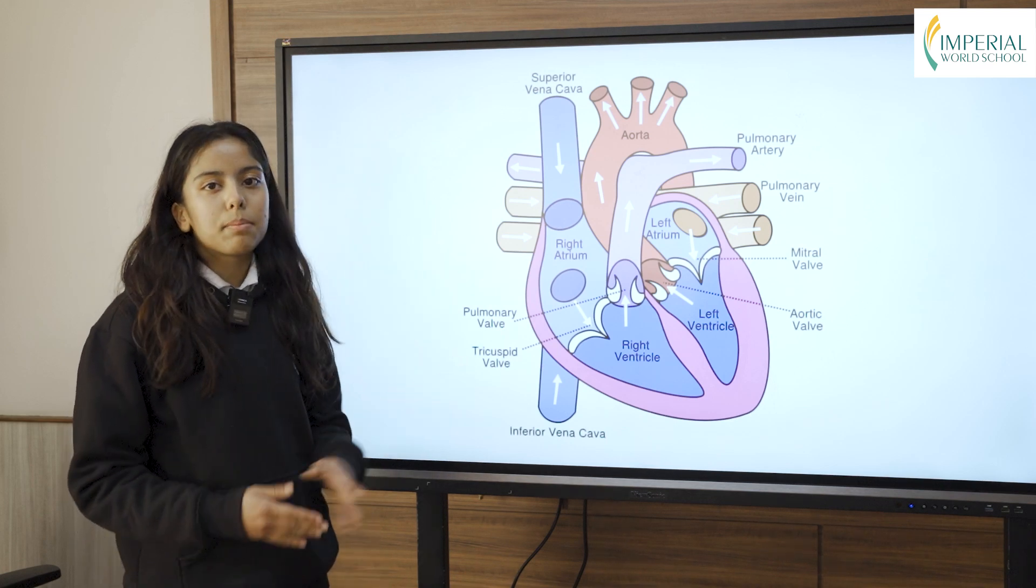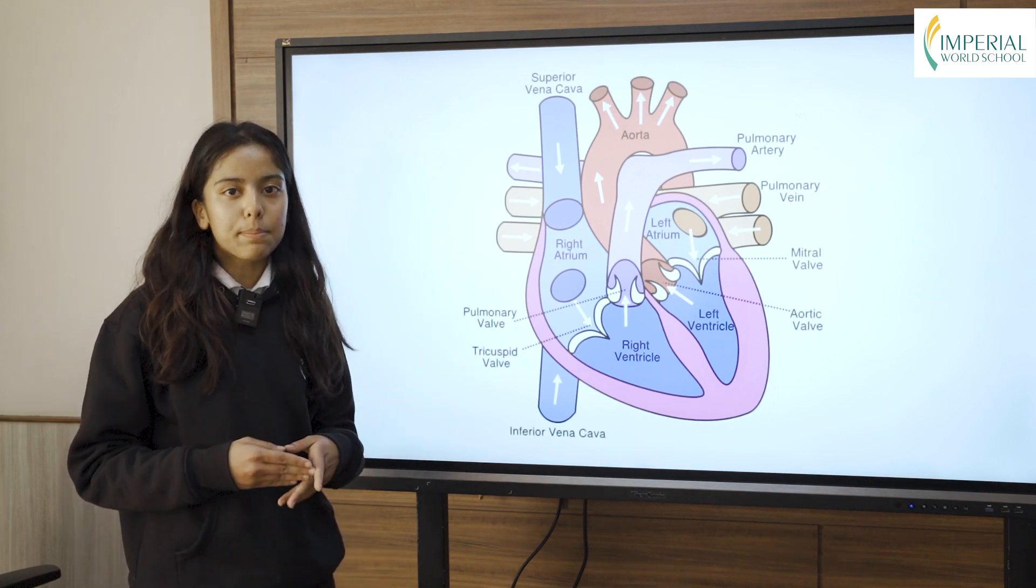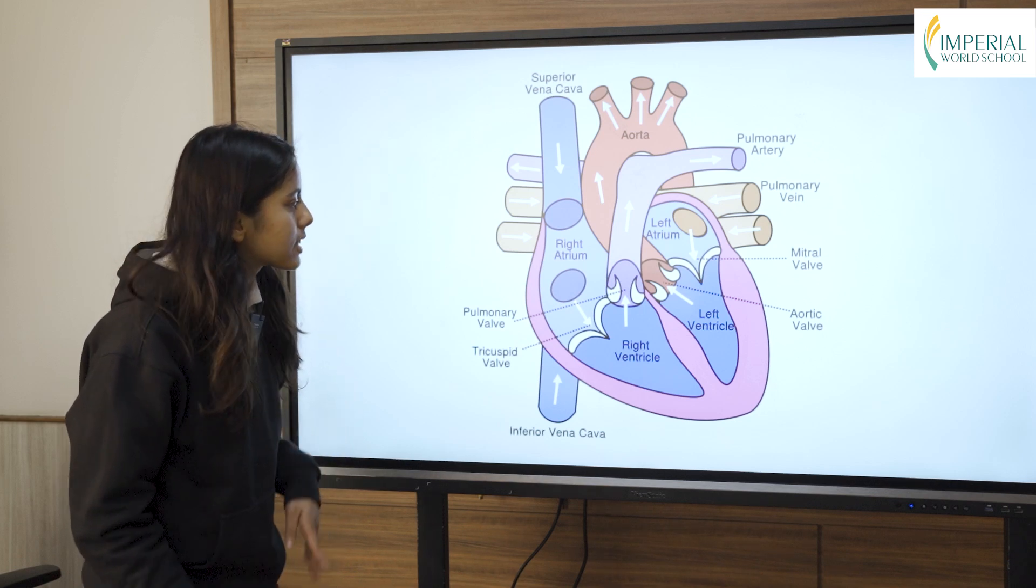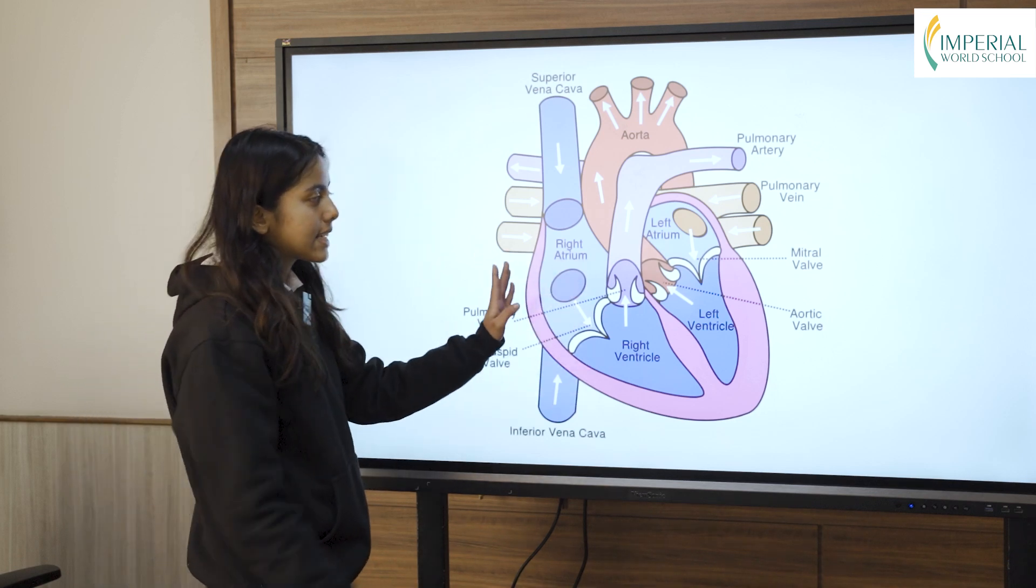The heart is centrally divided by a muscle called septum and septum is made up of cardiac muscle. The septum divides the heart into the right side and left side.